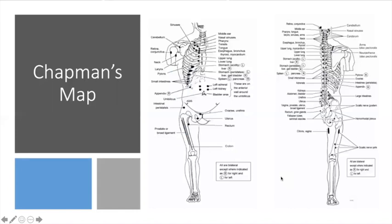This is the very popular map that if you Google Chapman's reflexes, you'll undoubtedly come up with. It was written in Dr. Owens's book, based on the work of Frank Chapman, and it shows various diseases correlating with a palpable nodule that can be felt at various areas. That nodule should be anteriorly located and have a corresponding point posteriorly.